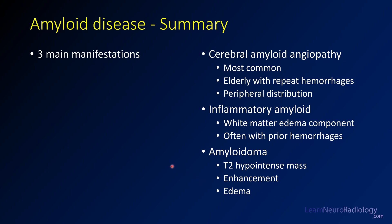In summary, we've seen three major CNS manifestations of amyloid. First, cerebral amyloid angiopathy — peripheral repeated hemorrhages sparing the areas of hypertensive hemorrhage, in elderly patients. Second, inflammatory amyloid — almost like an encephalitis picture, often with microhemorrhages in areas of edema and elsewhere in the brain. And third, amyloidoma — a T2 hypointense mass with areas of enhancement and edema that can be very challenging to differentiate from a brain tumor such as a glioblastoma. Thanks for tuning in — please check out the other videos in the playlist and subscribe for future videos.